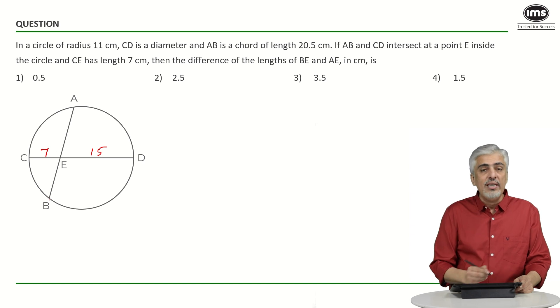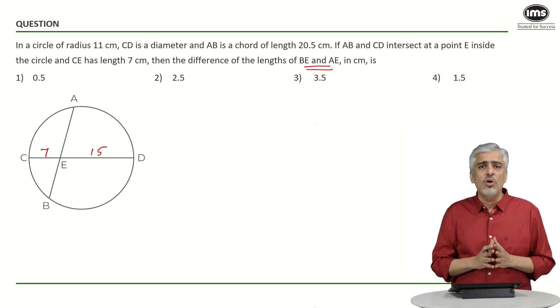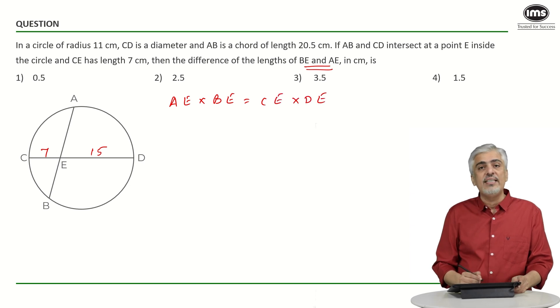I know the full length of AB and want to find the difference between BE and AE. Geometry is all about knowing your properties well. If you don't know your property, this problem would be literally impossible. We're using the property: when chords intersect internally, AE times BE equals CE times DE.